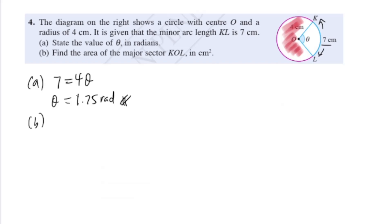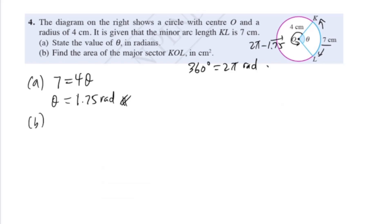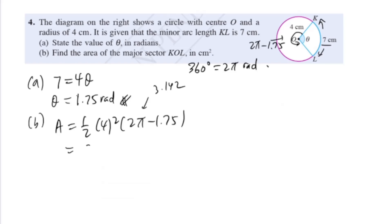The major sector is the bigger one. The radius is still 4. For the major sector, the angle is 2 pi minus theta, which is 2 pi minus 1.75 — since one full turn in radians is 2 pi. Area equals half times 4 squared times (2 pi minus 1.75). Using pi as 3.142, you should get 36.27 cm squared.